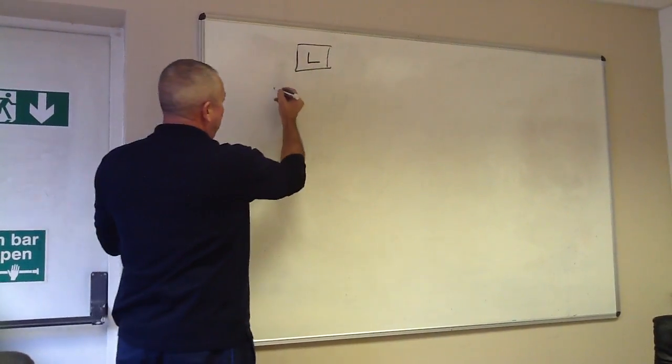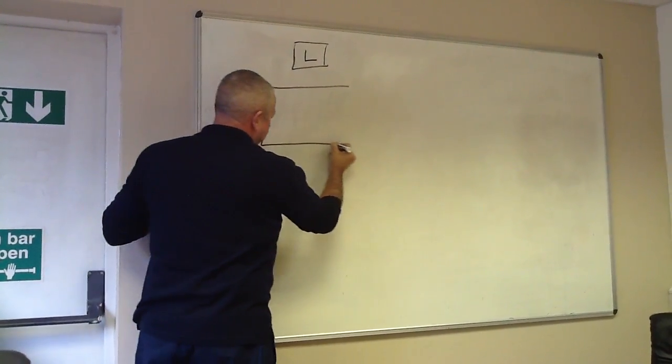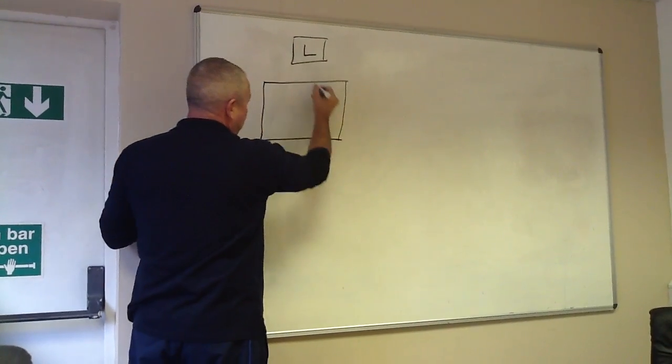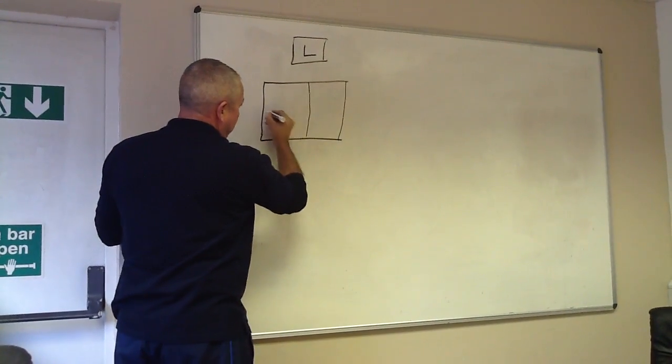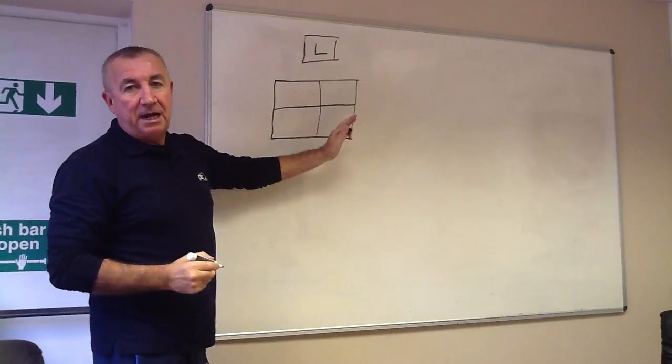Lungs at the top. We are then going to put a square underneath it and divide it into four. Not very evenly. This square represents the heart itself.